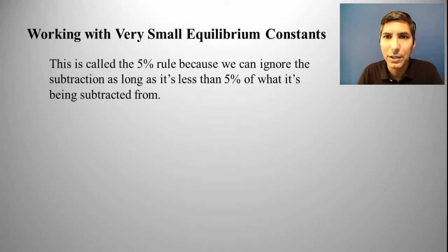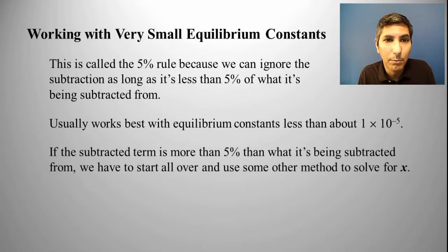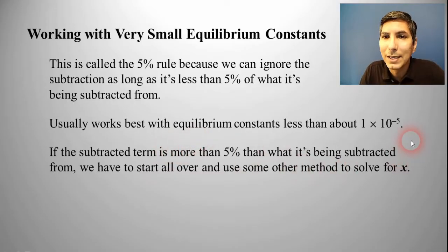This is called the 5% rule. The reason it's called that is because we can ignore that subtraction or that subtracted term as long as that term is less than 5% of what it's being subtracted from. That's why I did that little extra step there after solving for X. If for some reason that value ended up being more than 5%, I would have had to start all over and use cubic roots or quadratic equation or some other method to solve for X. This method works usually very well with equilibrium constants that are smaller than about 1 times 10 to the negative 5th. If you have equilibrium constants larger than that, like times 10 to the negative 4th, sometimes you're on the bubble. If you're in that range of 1 times 10 to the negative 3rd, this is probably not going to work.